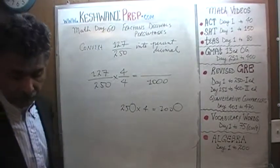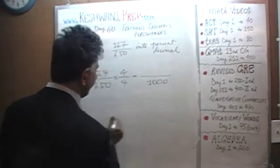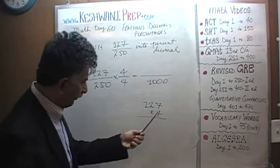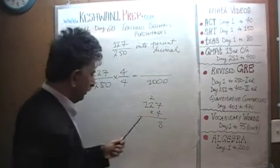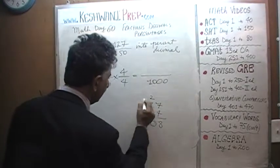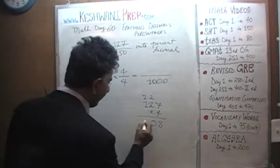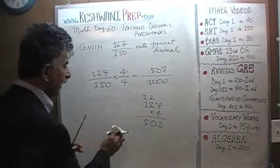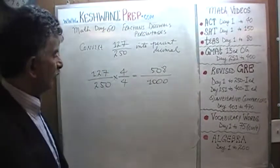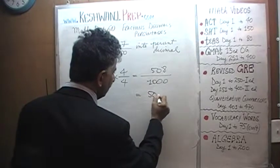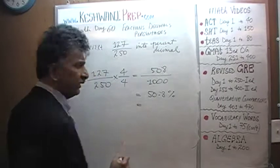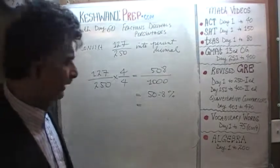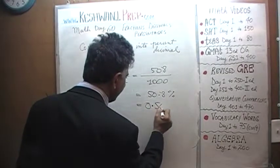Let's find 127 times 4: 7 times 4 is 28, write 8 carry 2; 2 times 4 is 8 plus 2 is 10, write 0 carry 1; 4 times 1 is 4 plus 1 is 5. We get 508 over 1000. In percentage form that is 50.8%, and in decimal form it is 0.508.